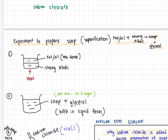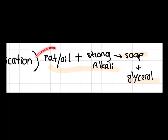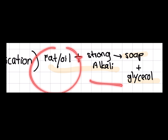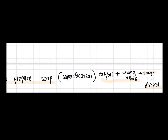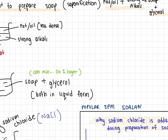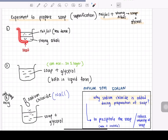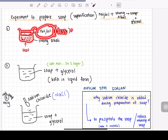This is an experiment of how to prepare soap. The process is called saponification: fat or oils plus strong alkali gives you soap plus glycerol. Add your fat or oil together with your strong alkali inside a beaker. If you notice, it will form a two-layer mixture, because fat or oil tends to be less dense than the alkali itself.